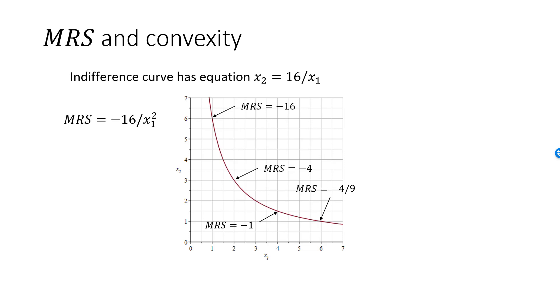We can see why convexity is such a natural assumption. If you look at the bundle up to the left, the (1,6) bundle, the absolute value of MRS is very large. This means the consumer is willing to give up lots of good 2 in order to receive more of good 1.